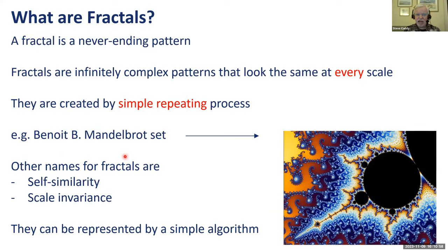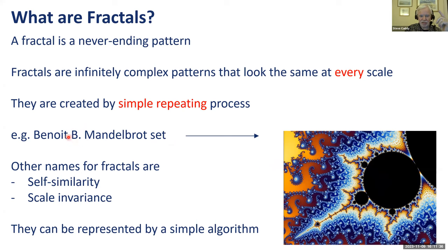So what are fractals? It's a never-ending pattern. Fractals are infinitely complex but they look the same on every scale. They're created by a simple repeating process. The name was coined by B. Mandelbrot, and one of his diagrams is shown here. Other names for fractals are self-similarity, because they keep repeating themselves, and scaling variance, which is important for reservoir modeling. We see the same on every scale. Fractals can be represented by a simple algorithm.